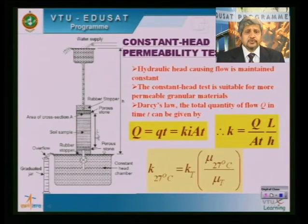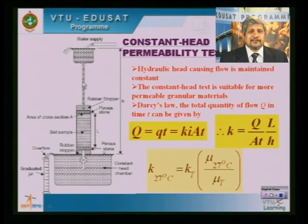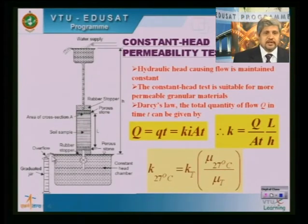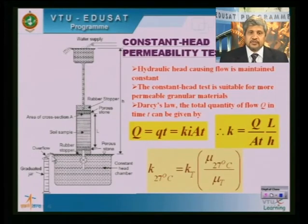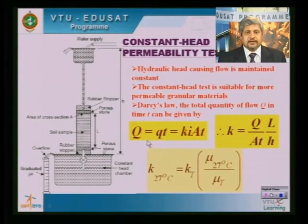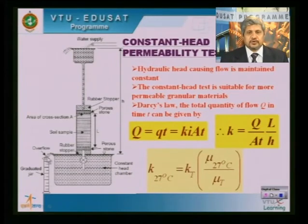Once you ensure the sample is in steady state and saturated, the experiment begins. You collect water in the graduated jar at different time intervals: Q1, Q2, Q3 at time intervals T1, T2, T3. We take the average to get the average quantity of water flow over a time period T — that is Q multiplied by T gives the total discharge Q.